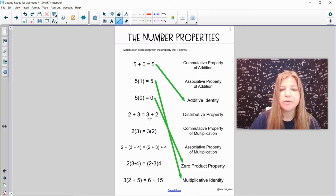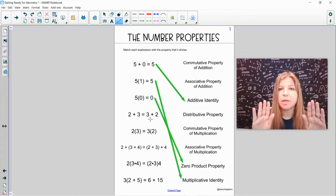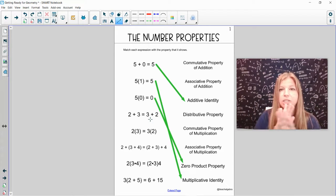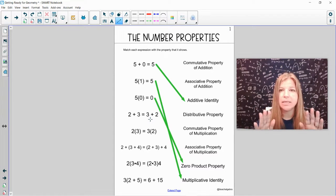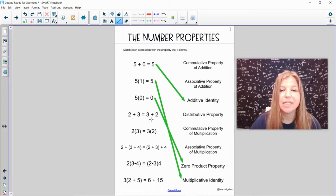Next one, 2 plus 3 equals 3 plus 2. When you have two numbers being added and the order just simply switches, that's called the commutative property. It does not matter what order we add numbers in. The result would be the same. 2 plus 3 is 5. So is 3 plus 2. It's 5. So that is my commutative property of addition.